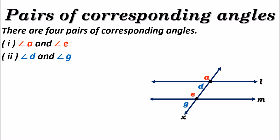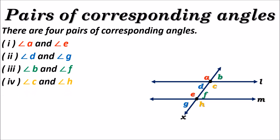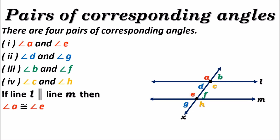To the right side of transversal x, angle b and angle f is the third pair of corresponding angles, and angle c and angle h is the fourth pair. So there are four pairs of corresponding angles in total. If line l and line m are parallel, then all corresponding angles are congruent: angle a ≅ angle e, angle d ≅ angle g, angle b ≅ angle f, and angle c ≅ angle h.